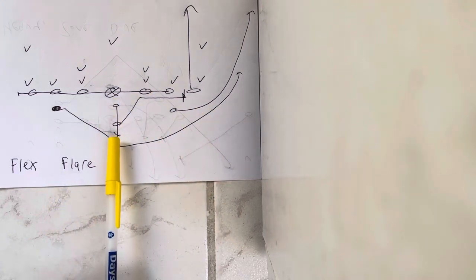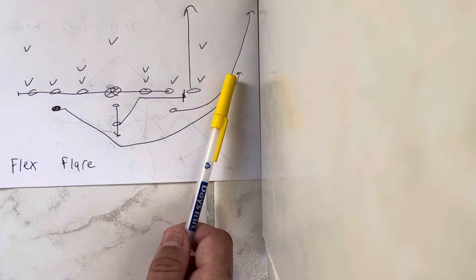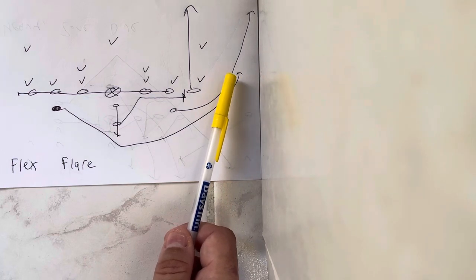Quarterback's going to five-step drop, and then on the fifth step, he's going to turn. He's going to hit the flare route. He's going to put the ball six inches in front of his numbers right there.